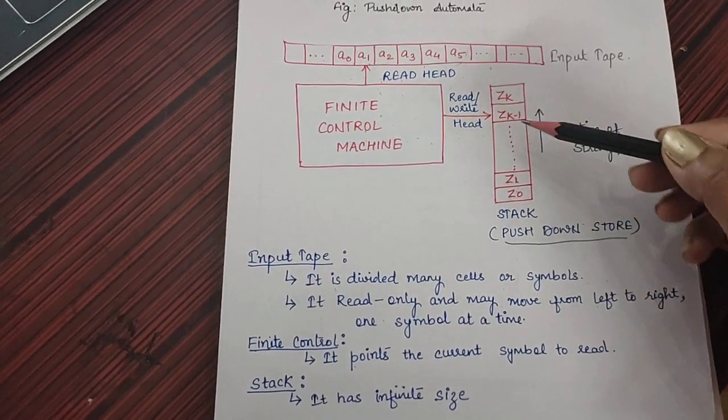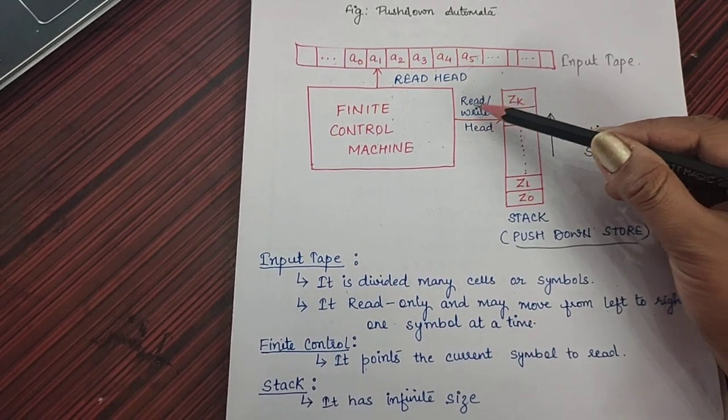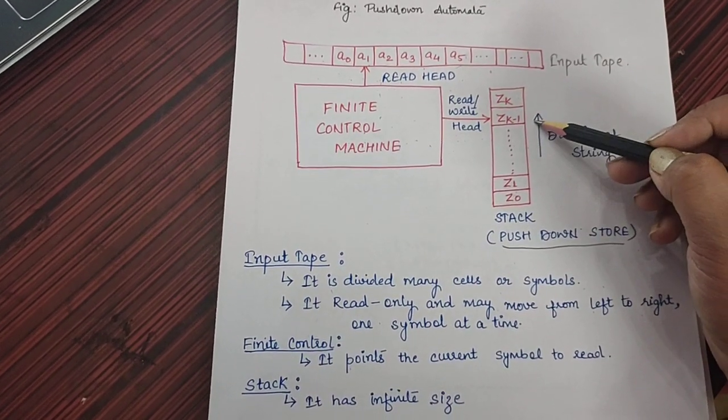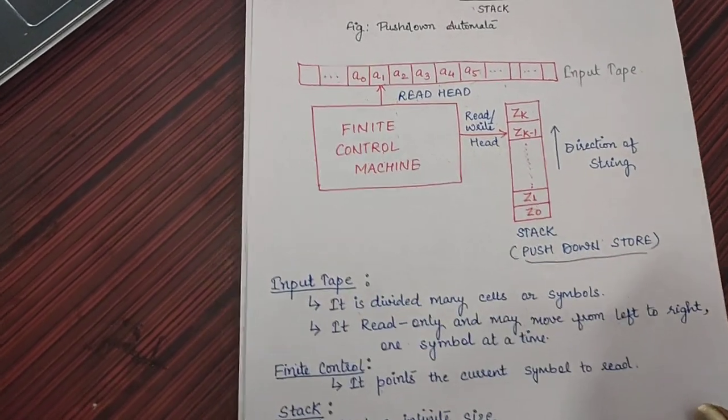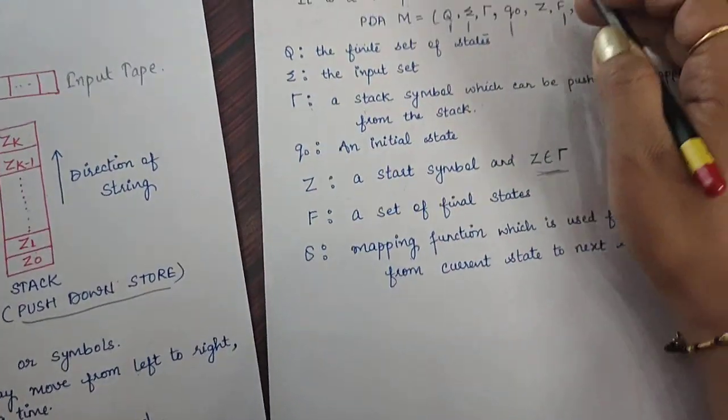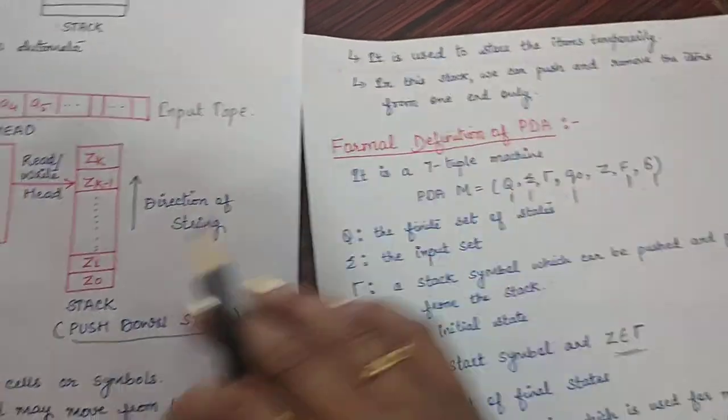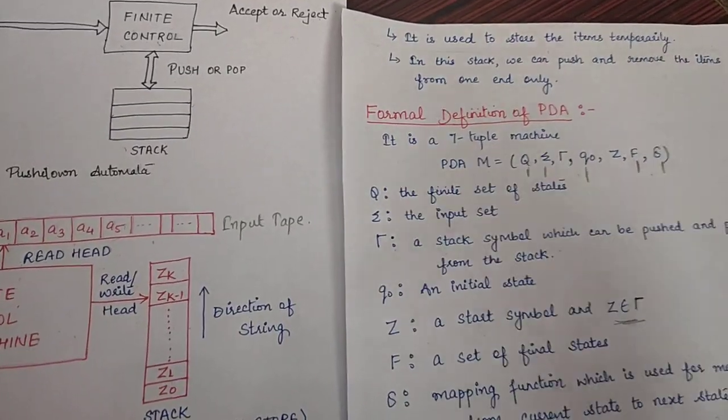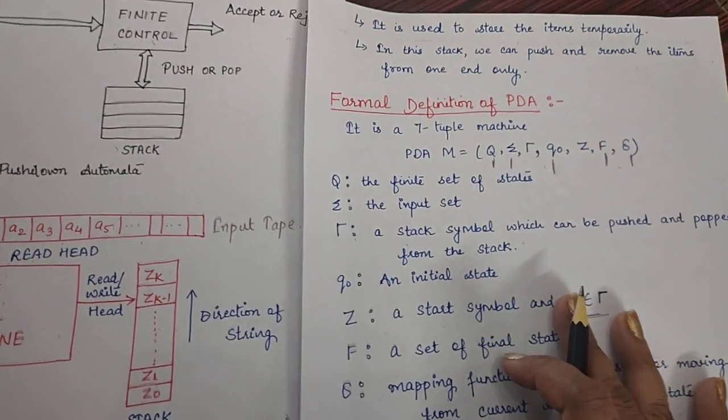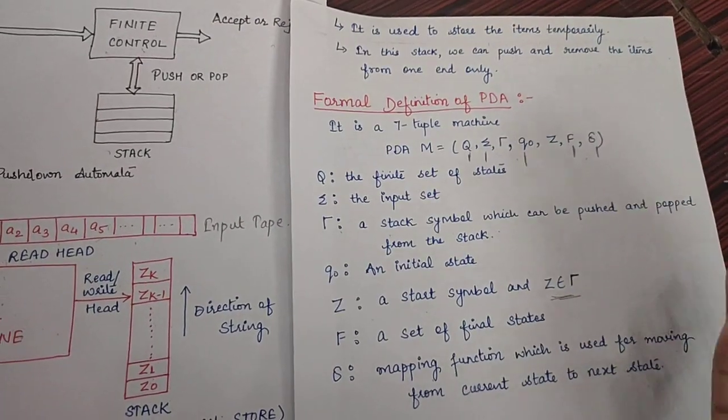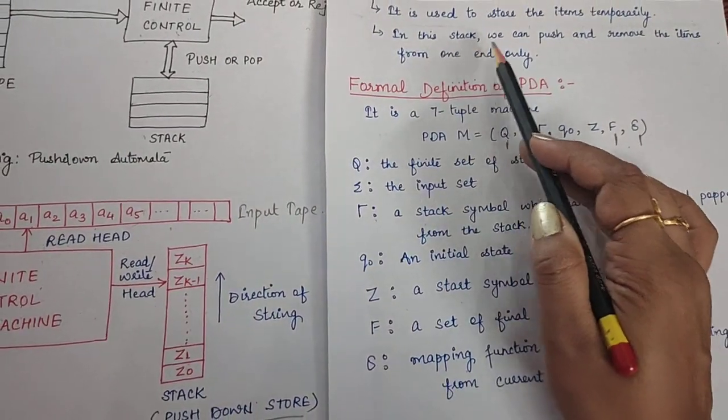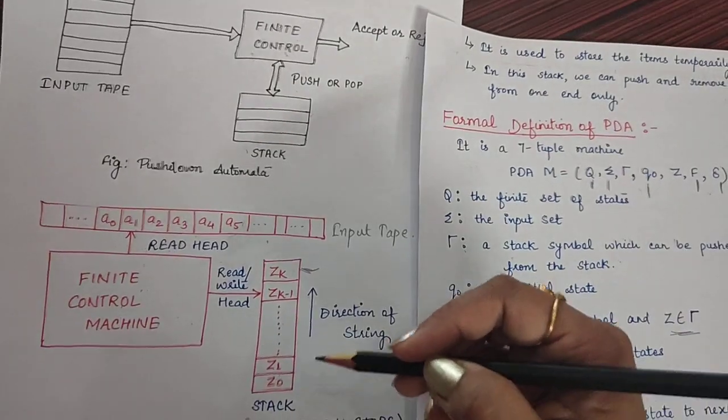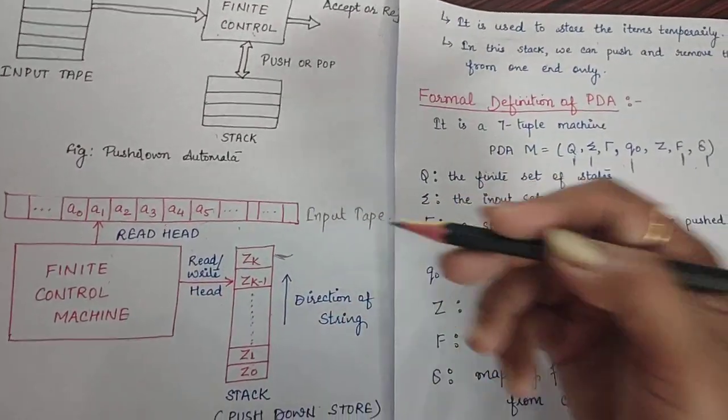The third component is the stack. This stack is connected to finite control machine through read or write head. In this stack, we can read as well as write the symbols according to the scenario, according to the given situation. This stack has infinite size. We can store items in this stack only on a temporary basis, not permanently. We can insert elements as well as push out or delete elements. But the thing is, we have to empty the stack at the end of the transition. In this stack, we can push and remove the items from one end only and that is called the top of the stack. And this is the direction of string, how the string or alphabets are inserted into this stack.